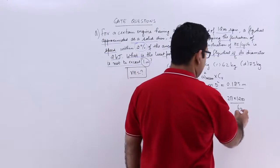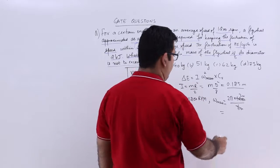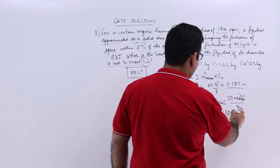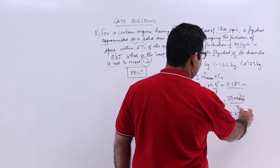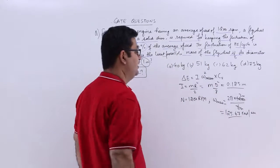This is cancelled of 20. So 40 pi. So 40 pi is 125.67 radians per second. That's omega mean.